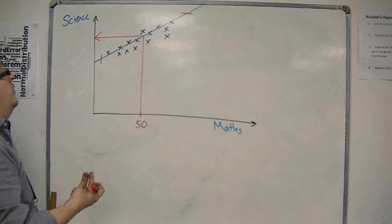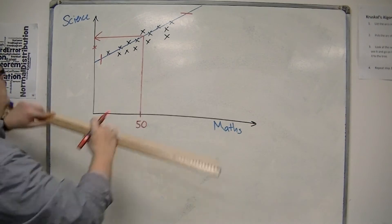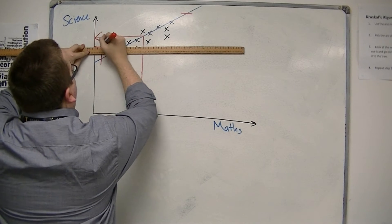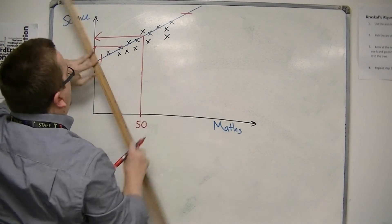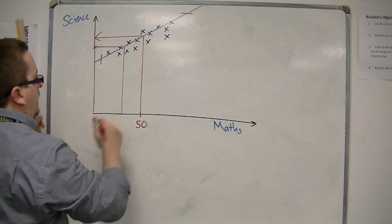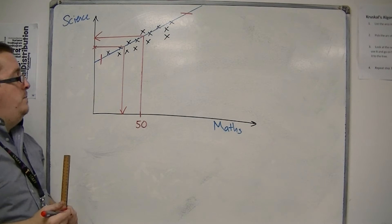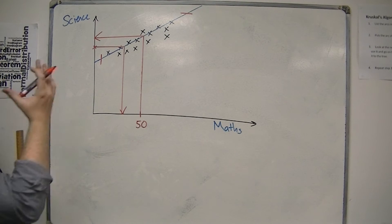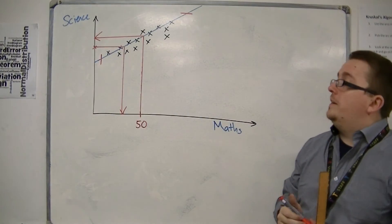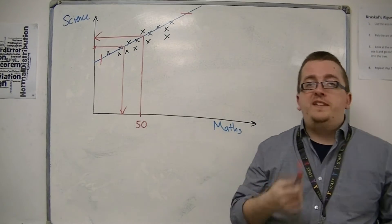Likewise, you could say, if they had scored such and such on the science exam, what would they have scored on the maths exam? So go horizontally to the line, and then vertically downwards to the maths axis, and read off the score. In both cases, you can estimate either the maths score or the science score with an initial score for the other exam. And that is how you can use the line of best fit to estimate.